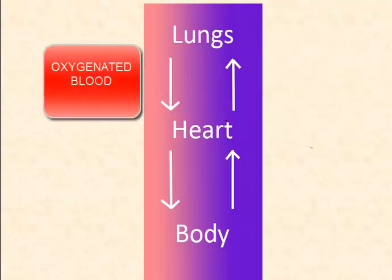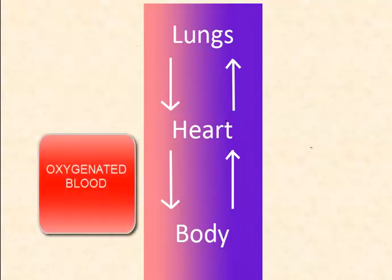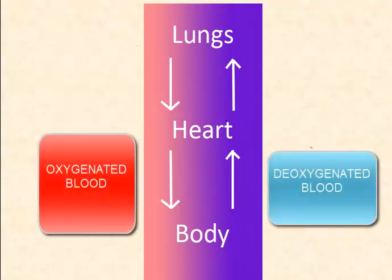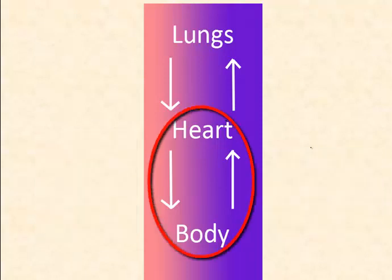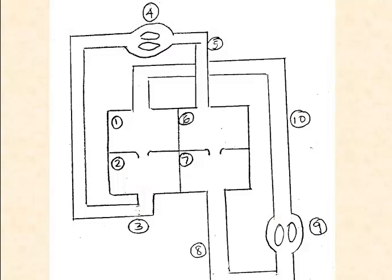The oxygen rich blood then returns to the left side of the heart, and from there it is pumped to all body cells to drop off the oxygen and return to the right side of the heart. This is systemic circulation. A double loop circulatory system requires two pumps.